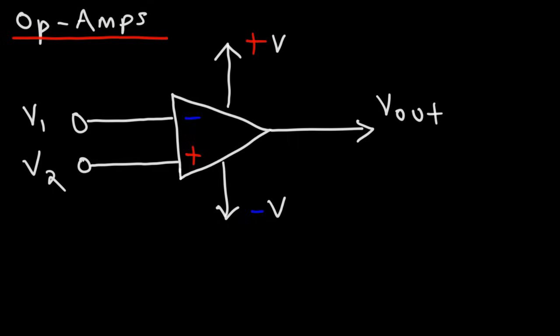Now the op amp has a very high input impedance, but a very low output impedance. The negative terminal here is known as the inverted input.